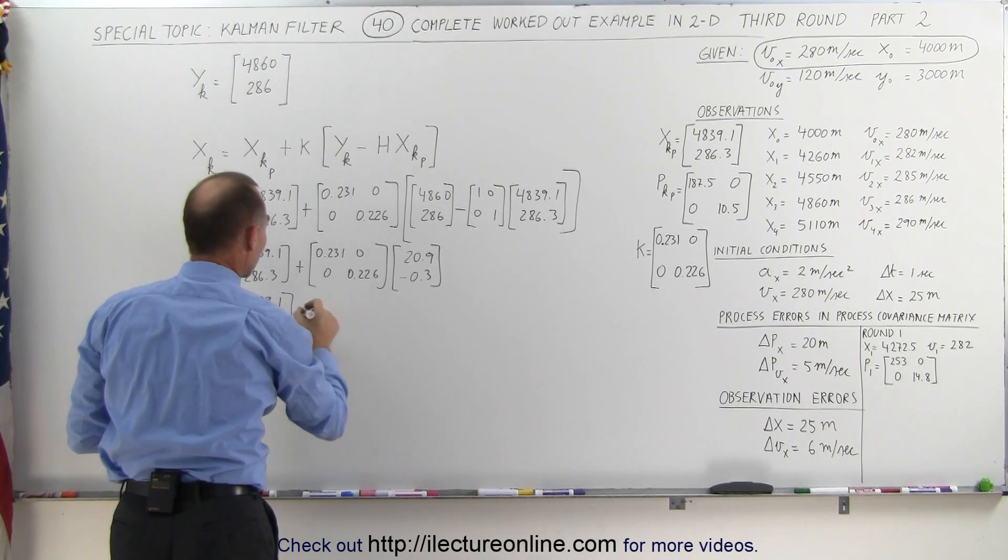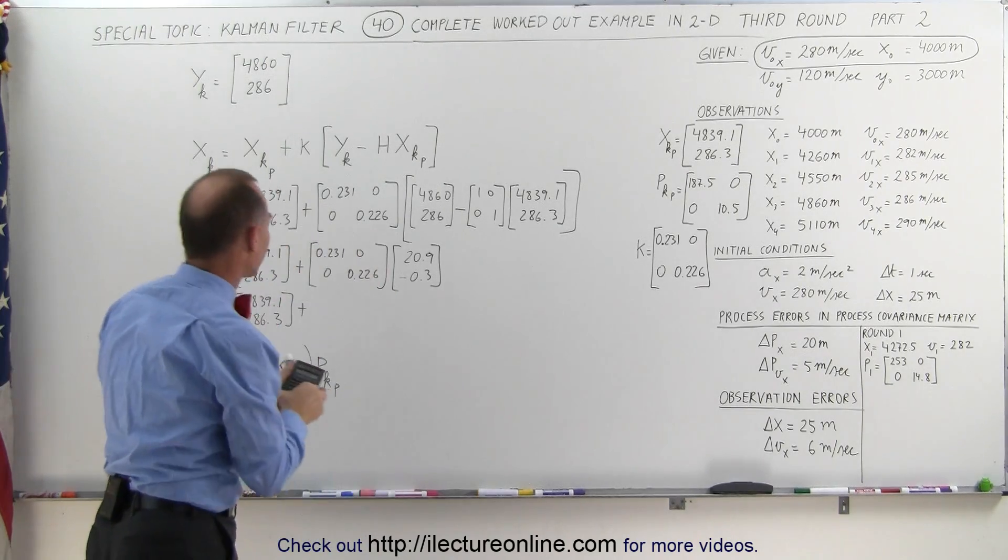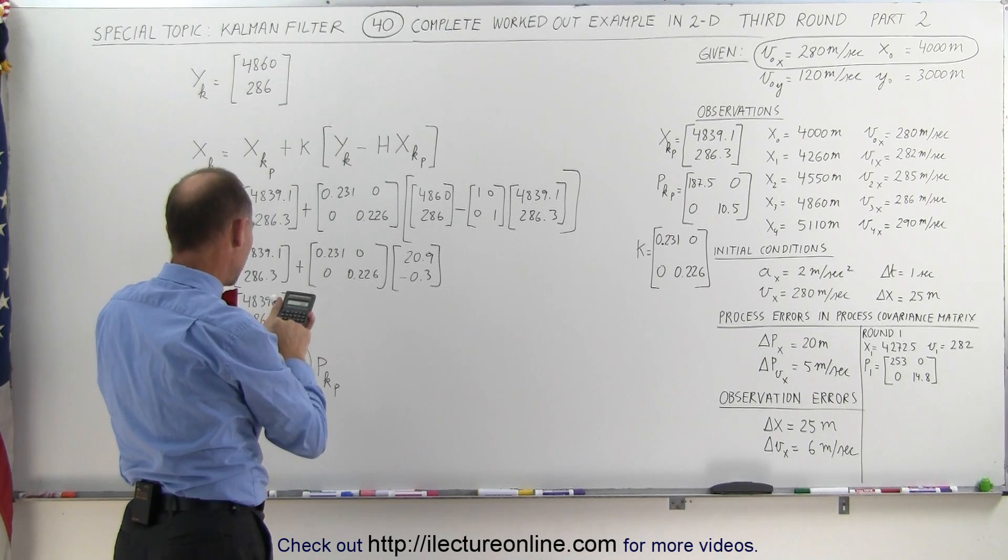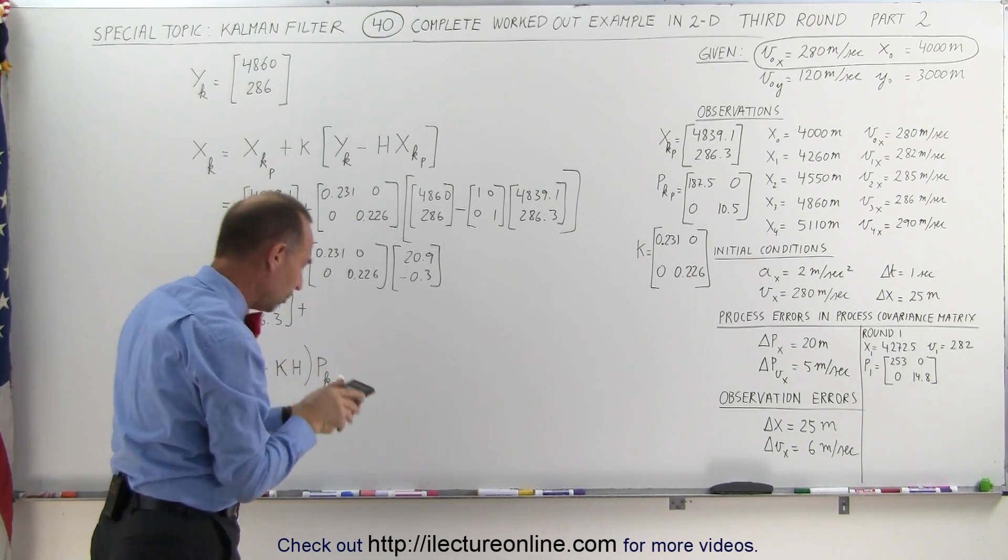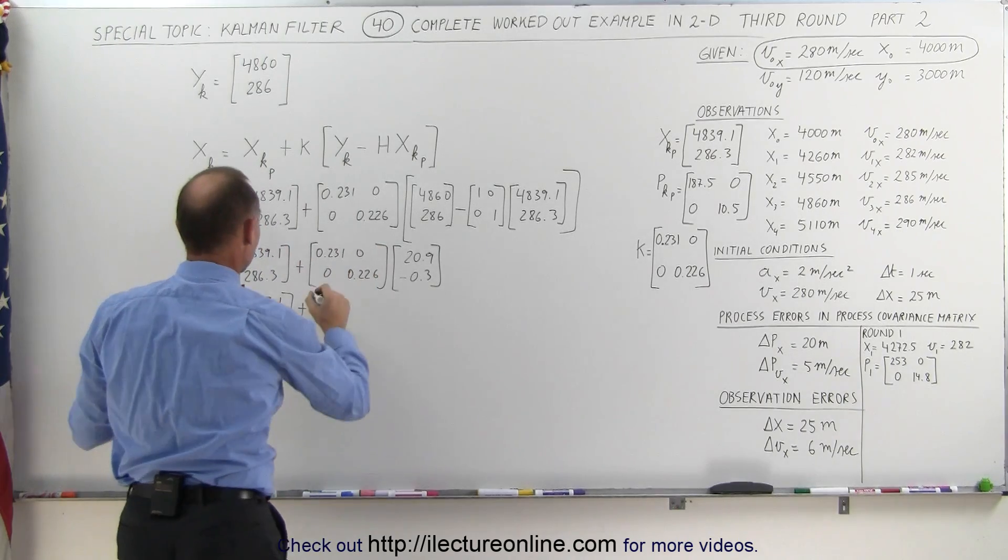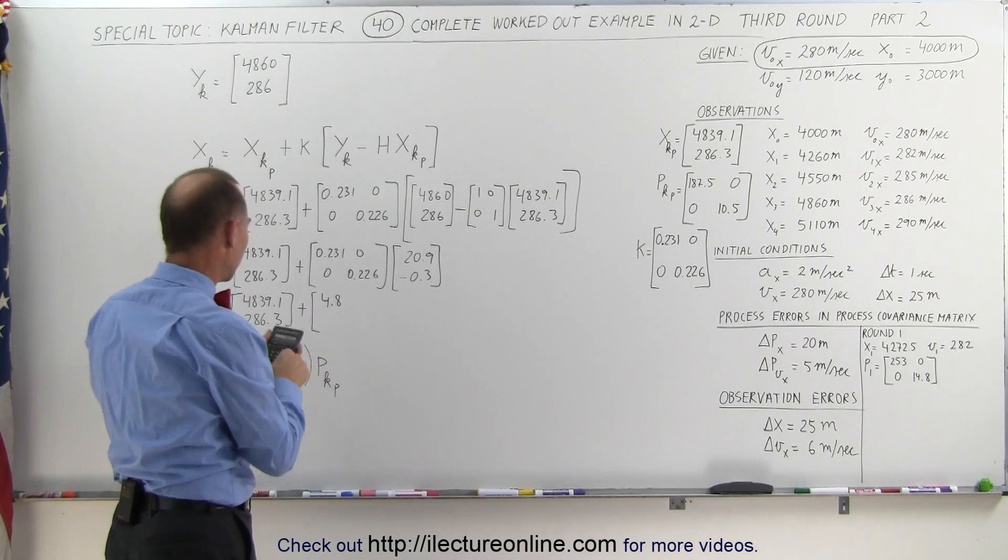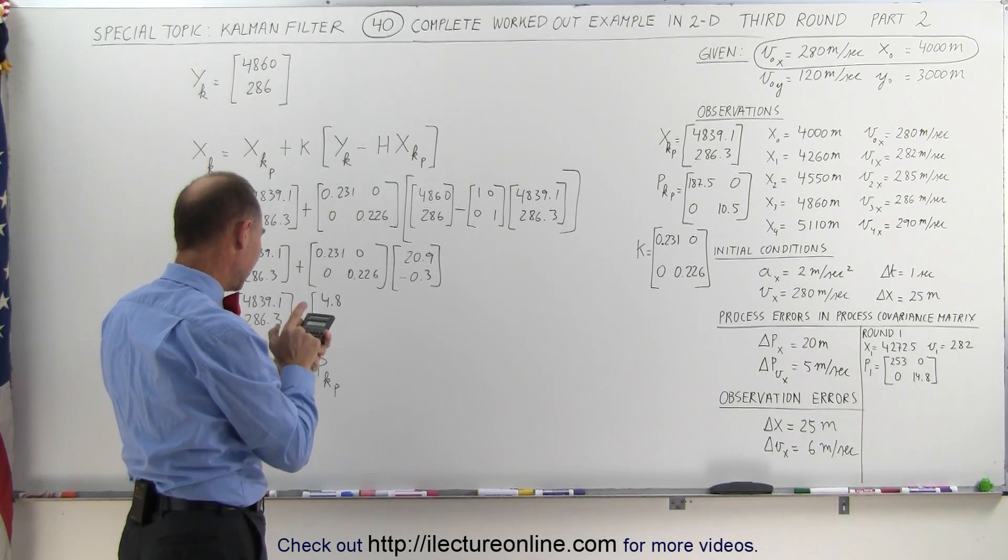These are the predicted values; we're going to adjust those with the Kalman gain. So now we have to multiply this. This times this, so we get 0.231 times 20.9. We have an adjustment of 4.8 to one decimal place. And 0.226 times 0.3, that's negative.